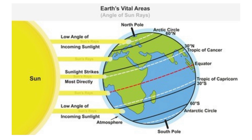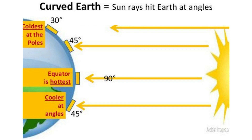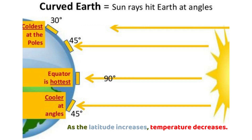Areas in temperate regions have four different seasons, while the polar regions have low temperatures resulting in a cold climate. Take note: places that are near the equator have high temperature, and places that are far from the equator have low temperature. Or we can say: as latitude increases, temperature decreases.